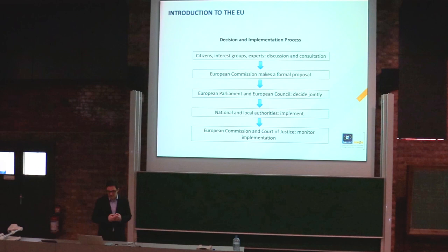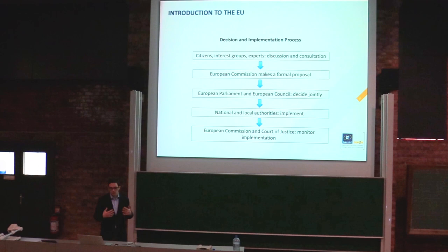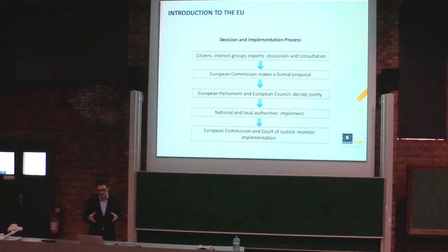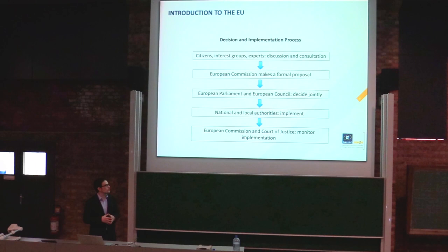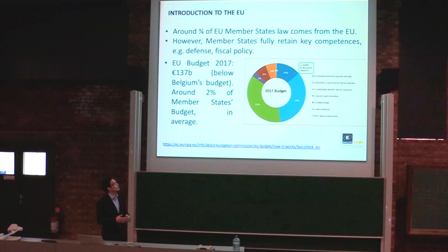This is how legal decisions are taken: first, consultation with citizens, interest groups, and experts; then the European Commission drafts a proposal, which Parliament and Council jointly decide on; it is published in the European Journal and transcribed into national laws. The Commission and Court of Justice monitor implementation by member states. Around three-fourths of the laws governing our lives come from the EU.